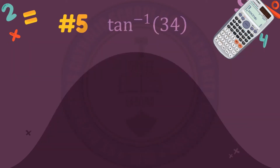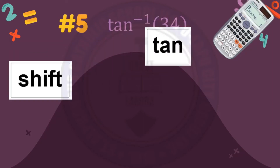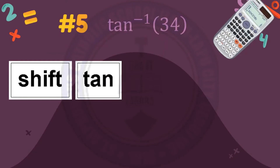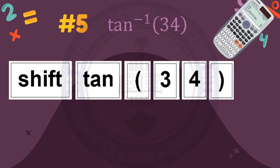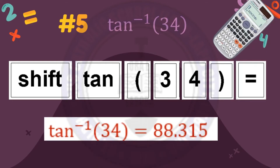Number 5: arc tangent 34. Press shift, then tangent, open parenthesis, 34, then close parenthesis, then equal sign. Our arc tangent 34 is 88.315.